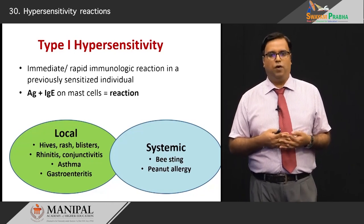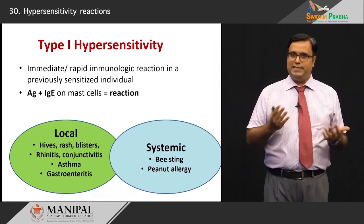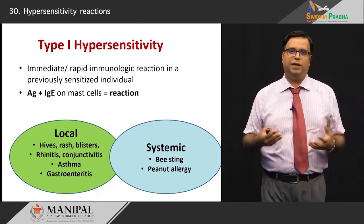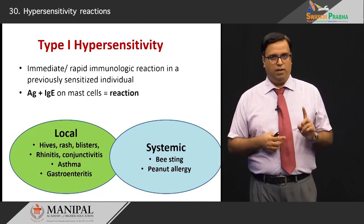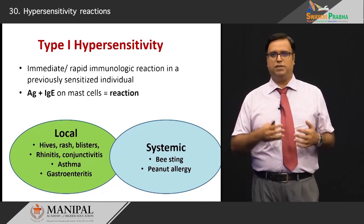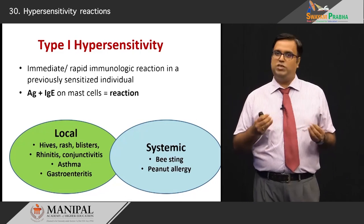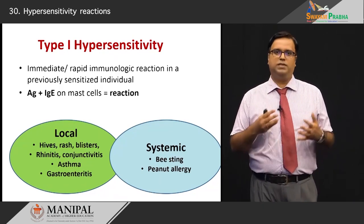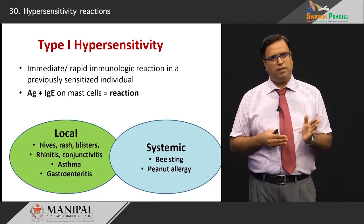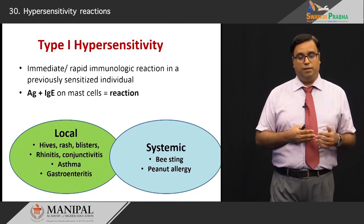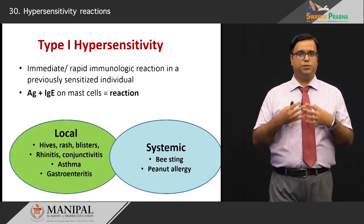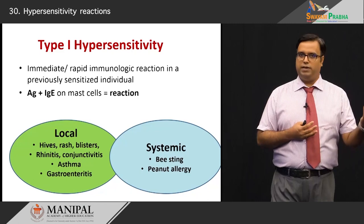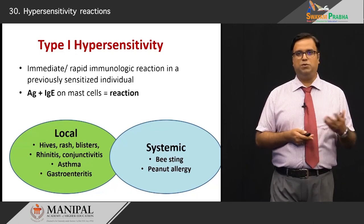Less commonly known, gastroenteritis can also fall under this territory — consuming food substances with allergic antigens such as seafood or egg can trigger it. Systemically, celebrated examples include a bee sting or wasp allergy — some people swell up immediately after a bee sting or ant bite containing formic acid — or peanut butter allergy.